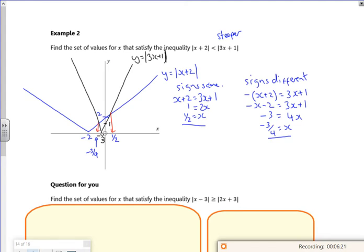Right, so where am I looking then? So I'm looking where, according to my colour scheme, where the shallow v, so the shallow v is below the steep v. So where is my shallow v below the steep v? And if you look, that's off to the sides.